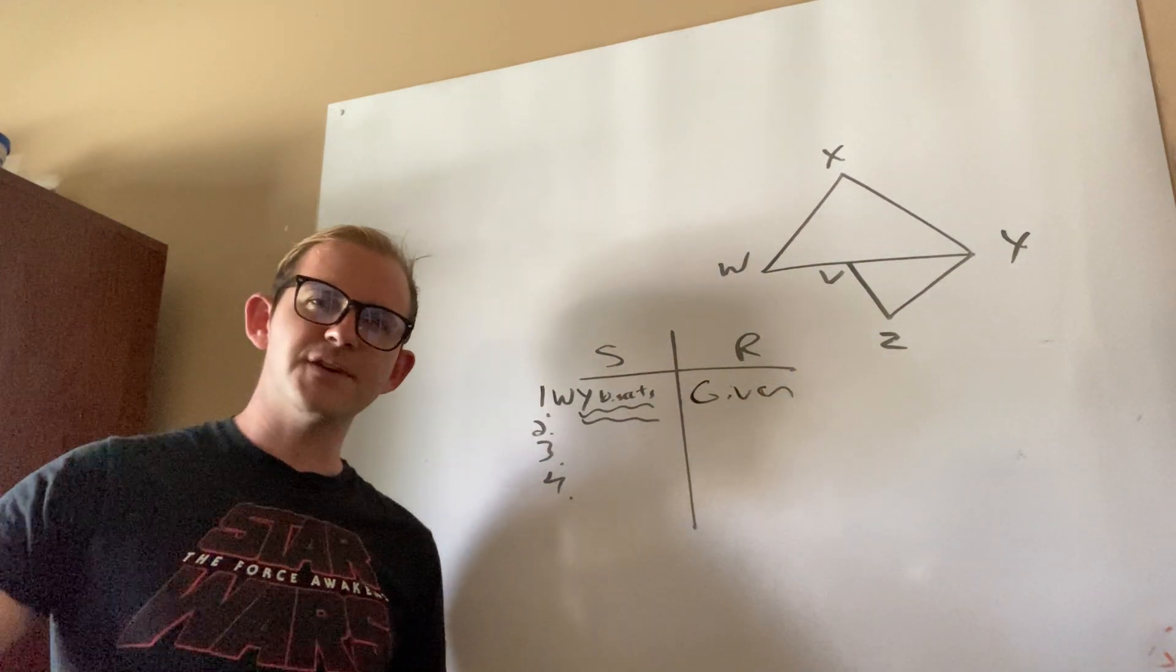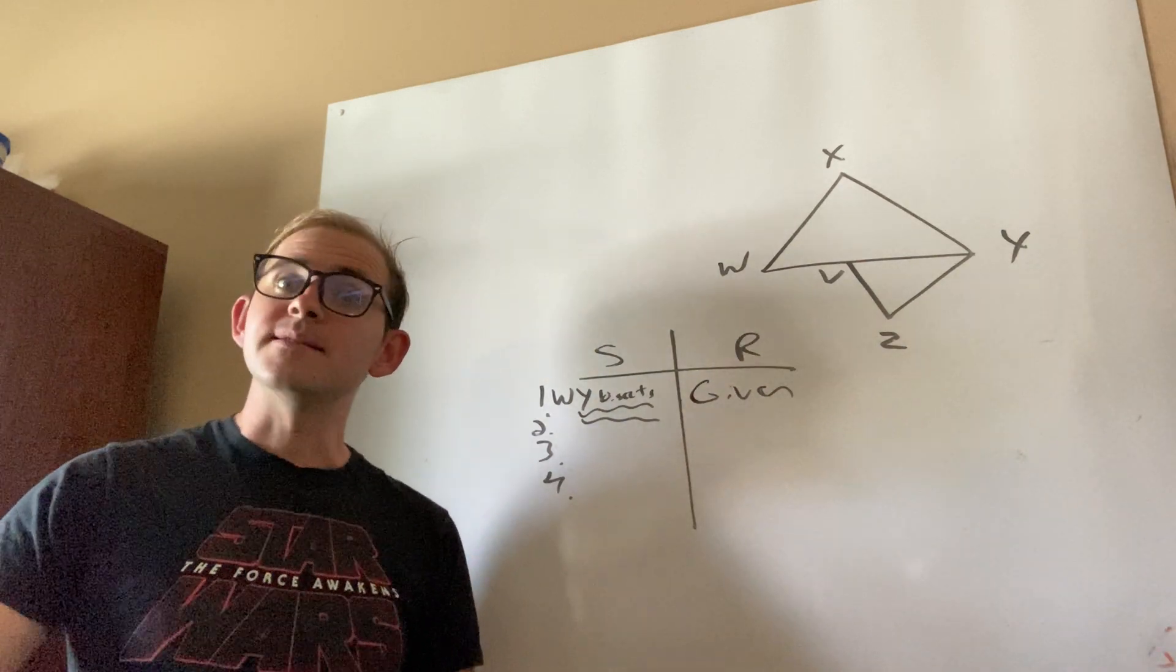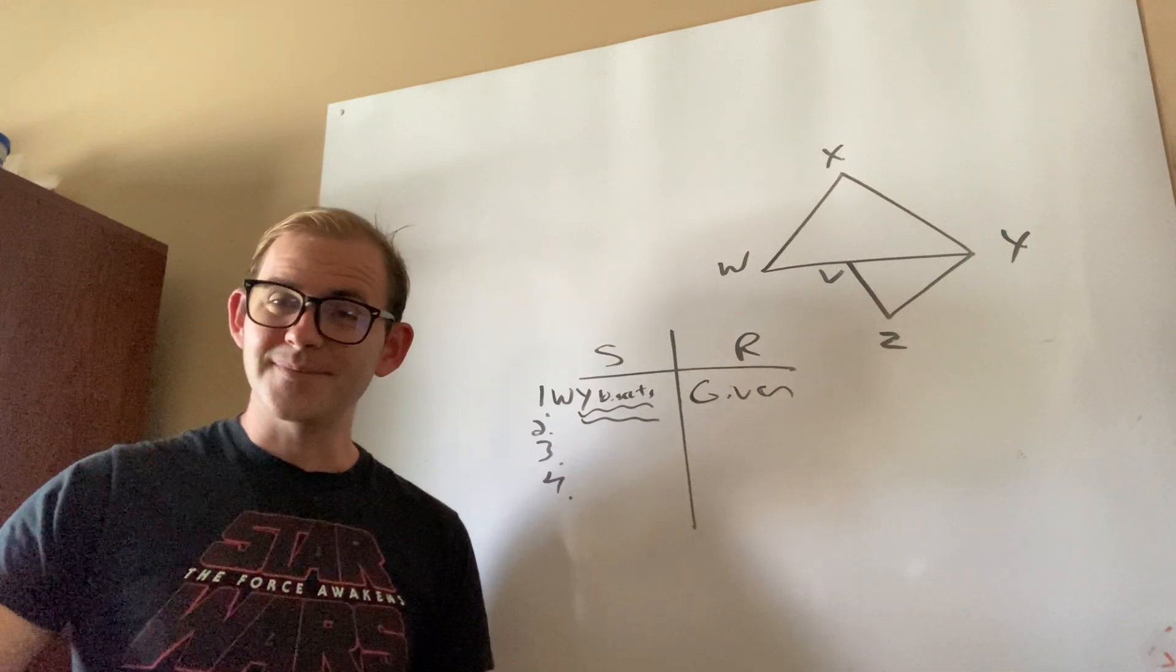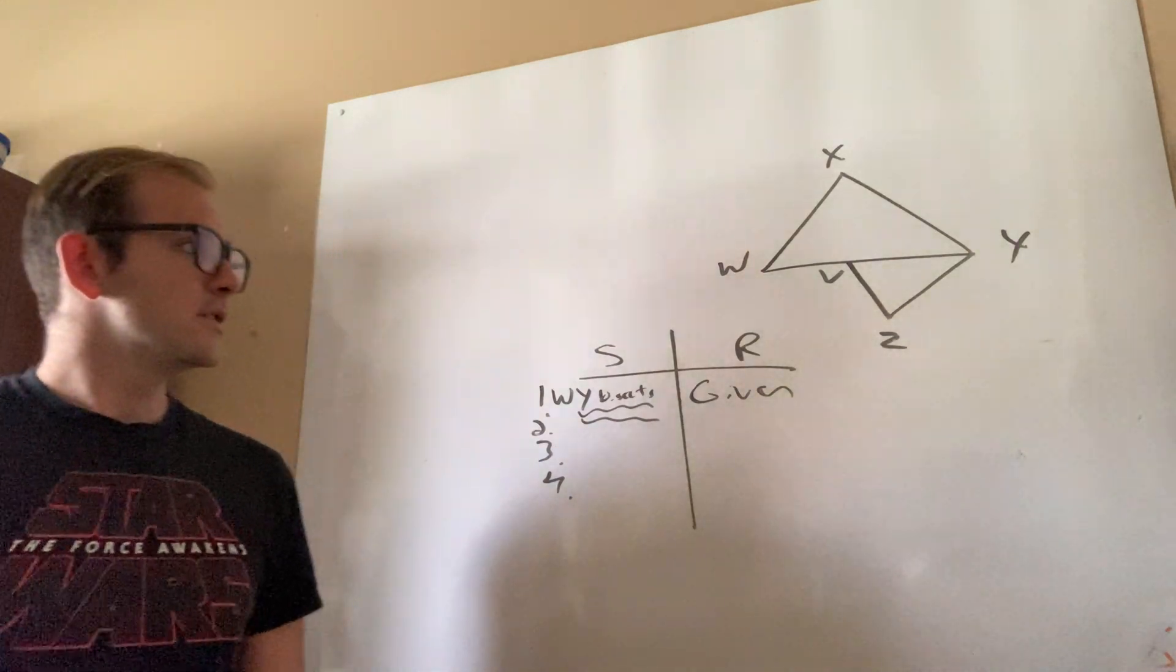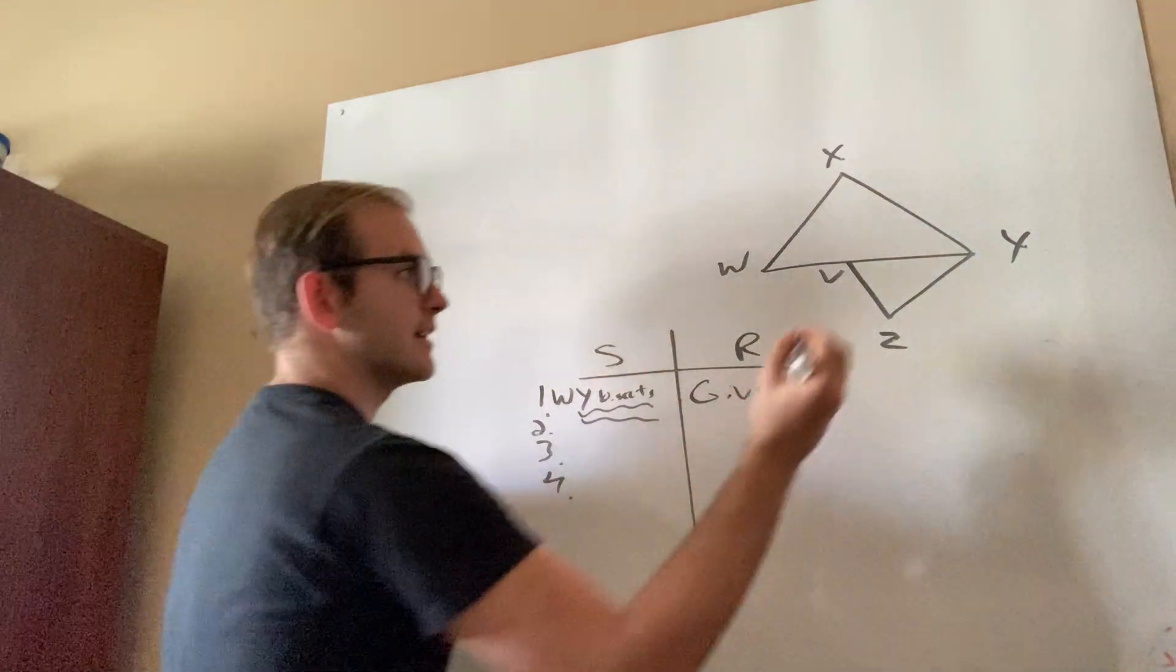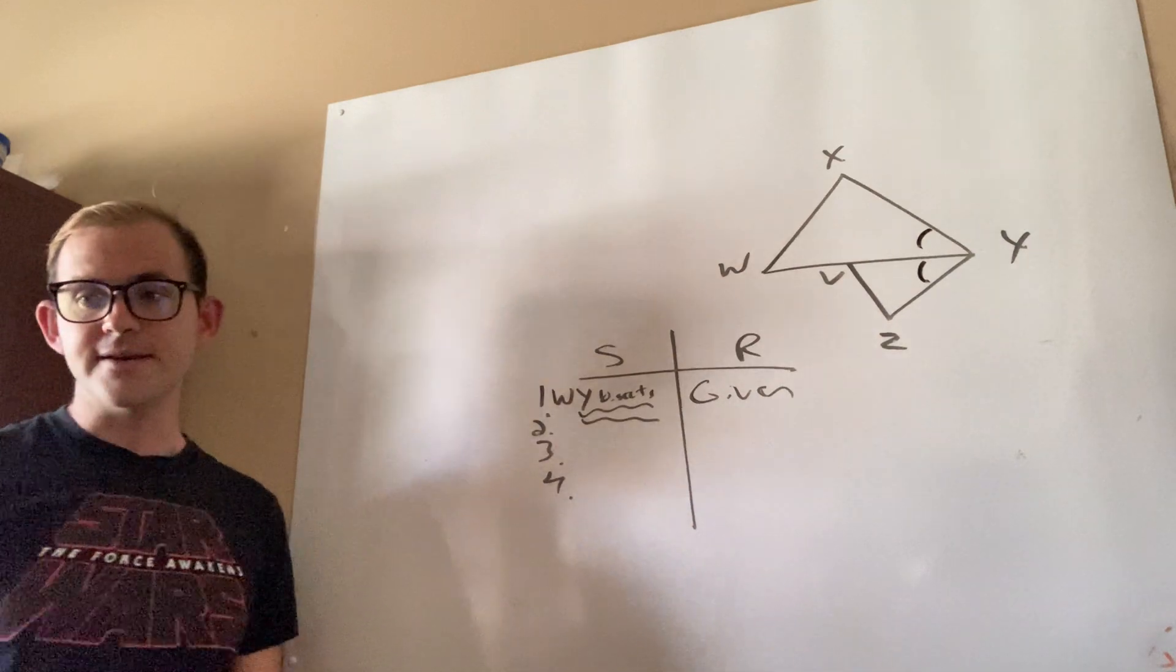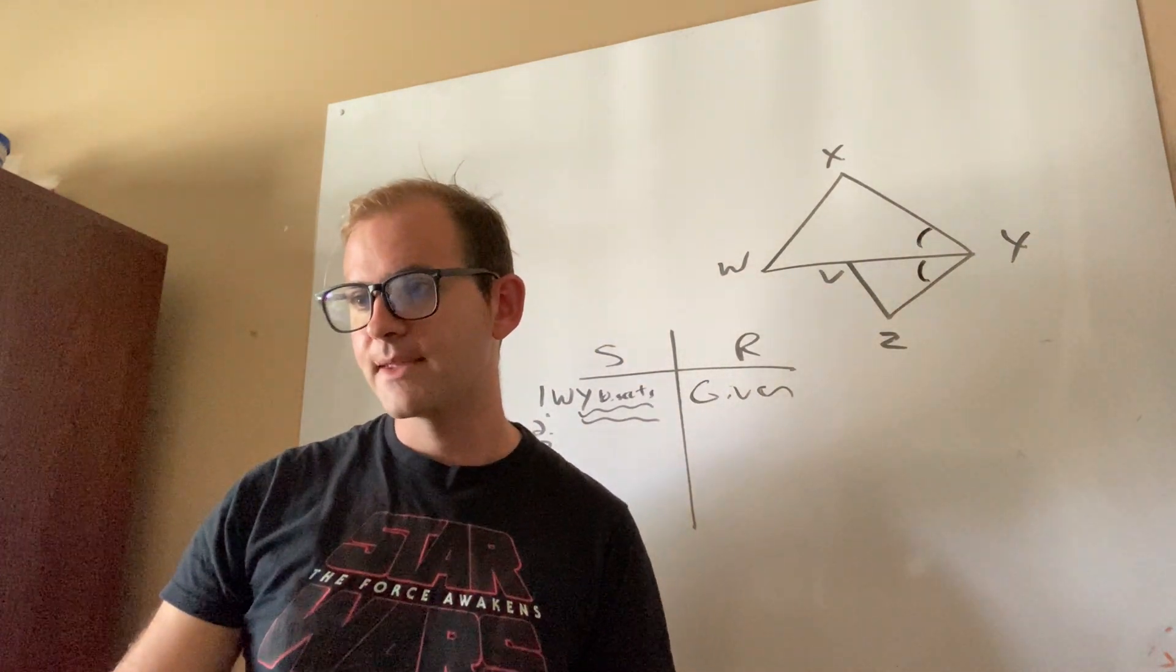But now, for line two, we need to figure out why the heck did they tell me that? What exactly does it mean to bisect? In unit one, we learned that to bisect something is to split it in two equal parts. So what that tells me, guys, is that these two angles right here happen to be exactly the same.